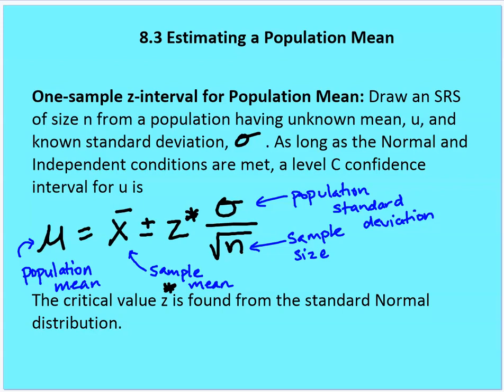One-sample Z interval for population mean. We're going to draw an SRS of some given size from a population having an unknown mean and a known standard deviation. As long as the normal and independent conditions are met, a level C confidence interval for the population mean is defined as the sample mean plus or minus the Z statistic times the population standard deviation divided by the square root of the sample size. We can use a standard normal table or the TI calculator to find the critical Z value.